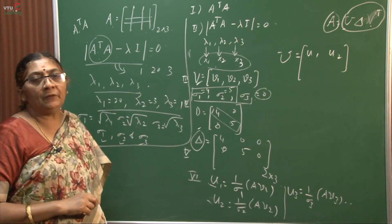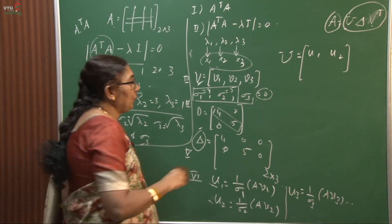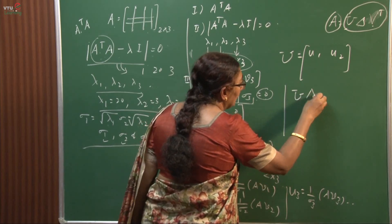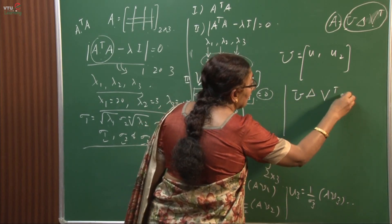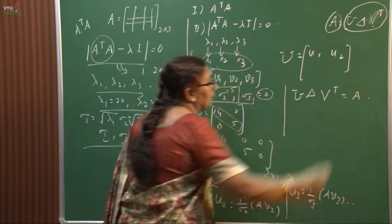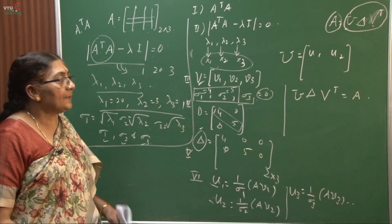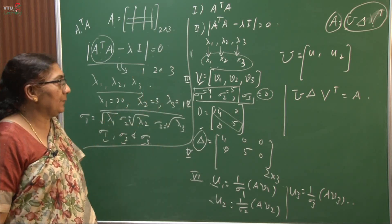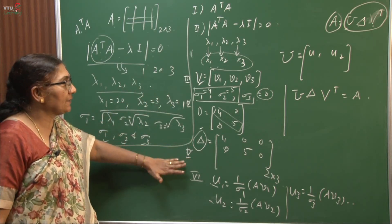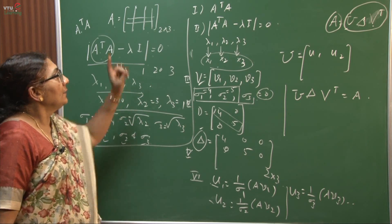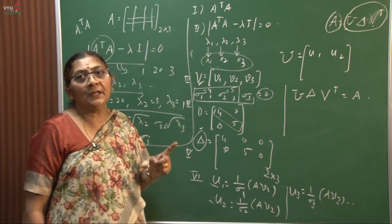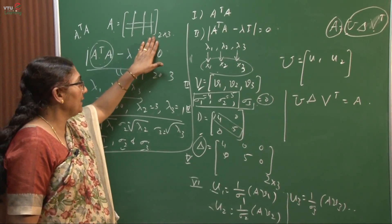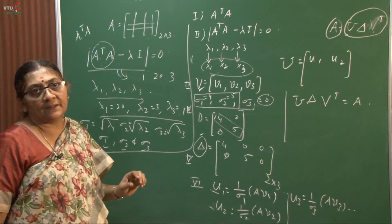After framing capital U, you verify by multiplying U, delta, and V transpose — this must give back the original matrix A. This is how to decompose the given matrix. Now before solving a problem, let me repeat the steps. First, find A transpose times A, because the matrix is usually not square, and multiplying A transpose times A converts it into a square matrix.